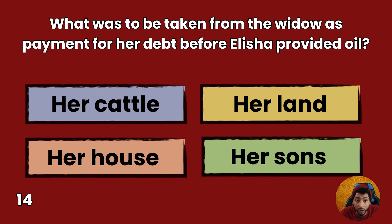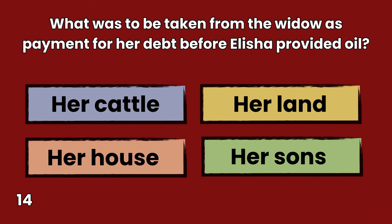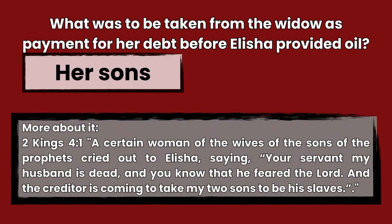Question 14: What was to be taken from the widow as payment for her debt before Elisha provided oil? Her cattle, her land, her house, or her sons? Answer: Her sons. 2 Kings 4:1 — A certain woman of the wives of the sons of prophets cried out to Elisha, saying, Your servant my husband is dead, and you know that he feared the Lord, and the creditor is coming to take my two sons to be his slaves.